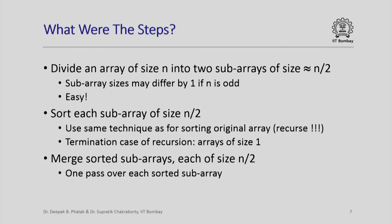The key steps of merge sort: we divide an array of size n into two sub-arrays of roughly n/2. If n is odd, the sizes may differ by 1 — this is an easy step. We then recursively sort each sub-array of size n/2 using the same technique, with the terminal case being arrays of size 1, which are already sorted. We also saw that merging sorted sub-arrays of size n/2 can be done efficiently with a single pass over each.